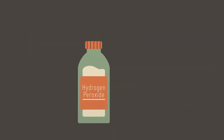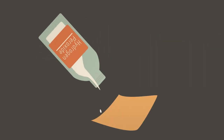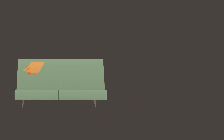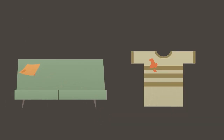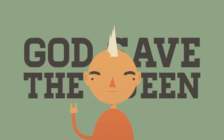Fairly dilute solutions of hydrogen peroxide, approximately 3–30% volume by volume, can be used as a household cleaning agent to remove stains on furniture and clothing. It can also be used to bleach or lighten darker hair.